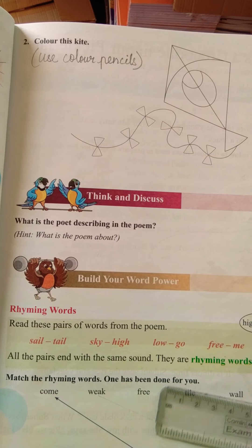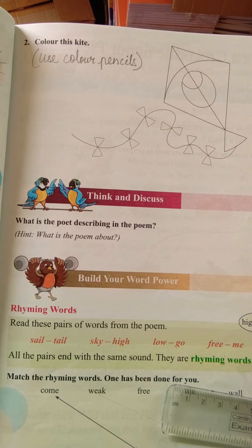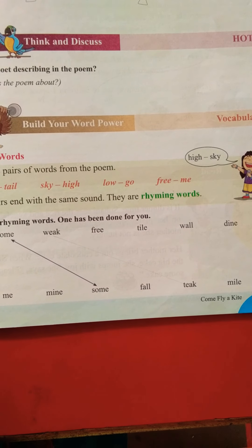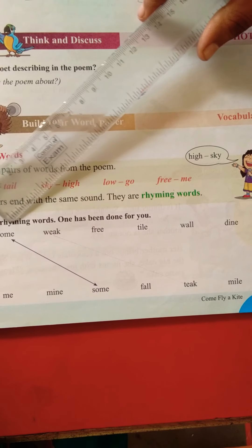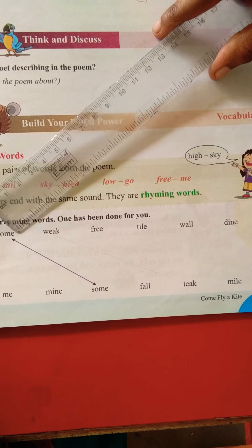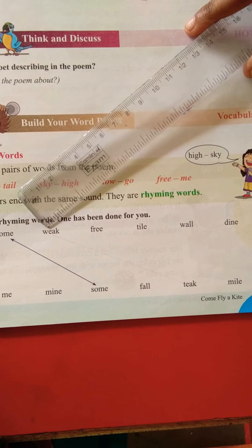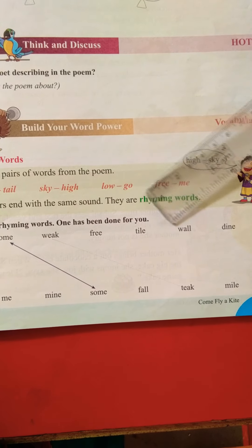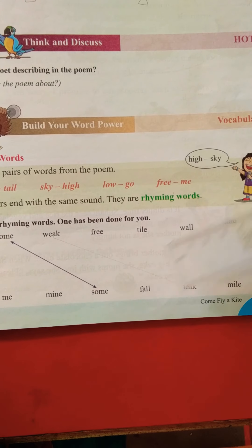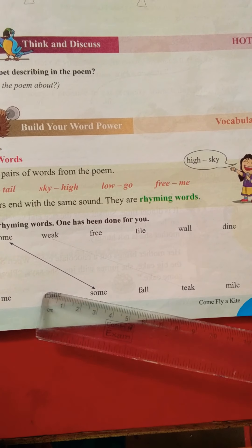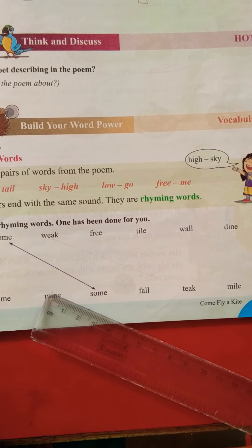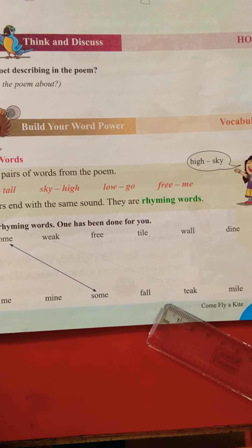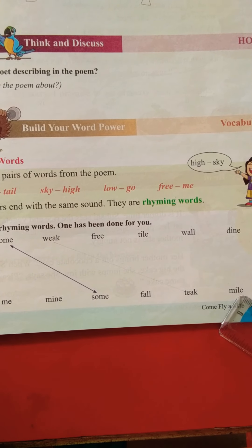Let's match some words. What are the words here? Come, weak, free, tile, wall, dine. And the second column is: me, mine, some, fall, tick, mine.